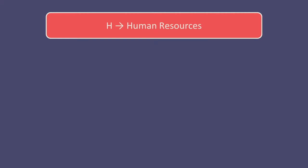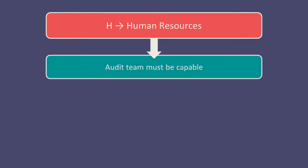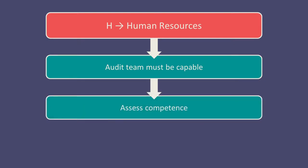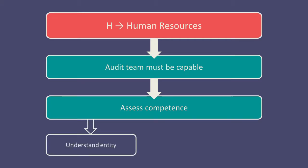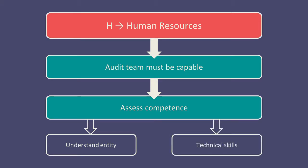The H is for human resources. The audit firm, and in particular the engagement partner who is responsible for the client, should ensure that their audit team is capable. They should assess the competence of the team members to ensure that the audit is performed at an appropriate standard. They should ensure the audit team has sound knowledge of the client being audited and therefore understands the entity and its environment. They must also ensure the technical skills within the audit team are enough to reach appropriate conclusions.